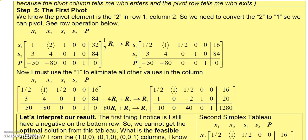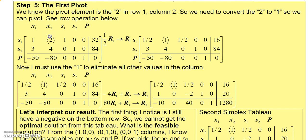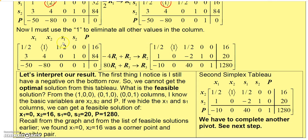When I say pivot, I mean making the pivot element a 1 and then using that 1 to eliminate the other elements in that column. We're pivoting on this 2, so the first thing I do is multiply everything in row 1 by one-half — that makes it a 1. Then I eliminate the 4 by multiplying row 1 by negative 4 and adding it to row 2. Then I eliminate the negative 80 by multiplying row 1 by 80 and adding it to row 3.